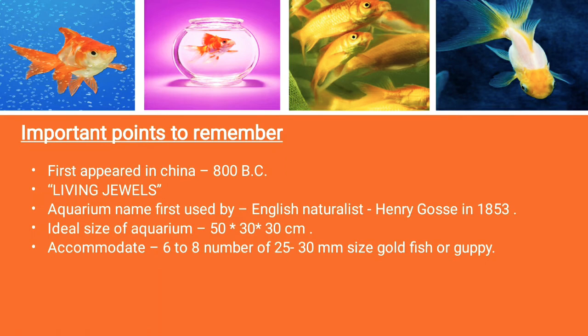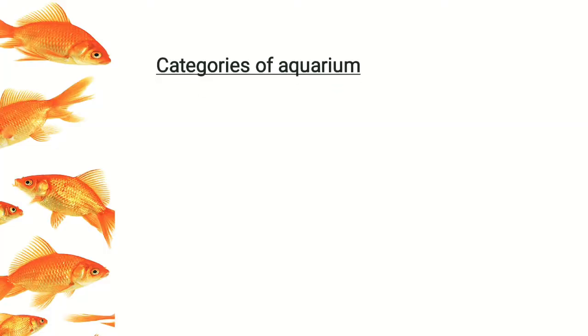In this chapter on ornamental fish production, important points include: what are ornamental fishes, how aquarium keeping started, who started it, what is an aquarium, who first gave the term 'aquarium,' and what the types of ornamental fishes are — including marine ornamental fishes and freshwater ornamental fishes.